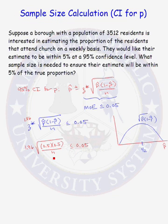We need to rearrange our inequality to get N by itself. Rearranging our inequality, we find that N has to be greater than or equal to 384.16.